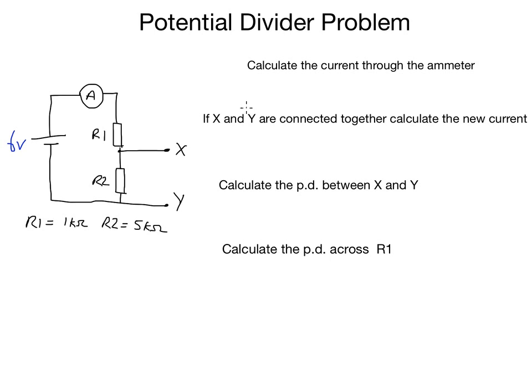The first question says calculate the current through the ammeter. The current through the ammeter in this case, because X and Y are not joined, it's a simple series circuit.